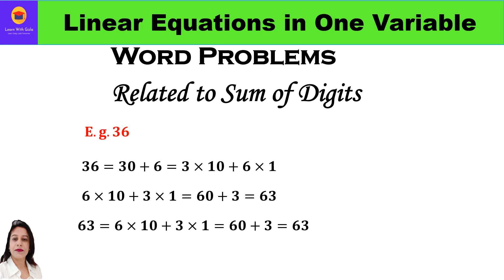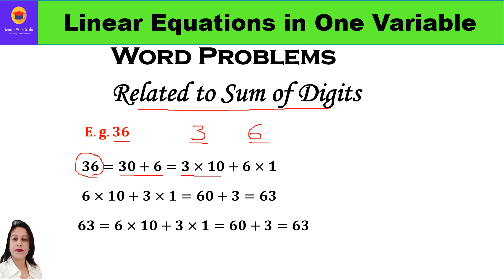Before taking up questions, let me first explain the concept behind solving these word problems related to sum of digits. Let me take a number, say 36. 36 consists of two digits: 3 and 6. 3 is in the tens place and 6 is in the ones place. So 36 can be written as 3 into 10 plus 6 into 1, because 3 was in tens place so we multiplied by 10, and 6 was in ones place so we multiplied by 1.